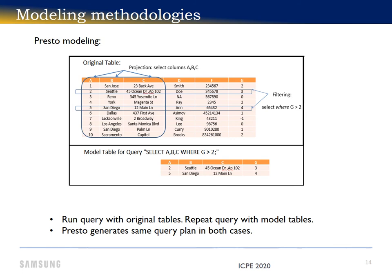For Presto, both original and model queries generate the exact same query plan. If that was not the case, we would not be able to compare results. Similar to our Spark SQL model, the performance difference is the upper bound of the speedup that a computational storage device would yield.